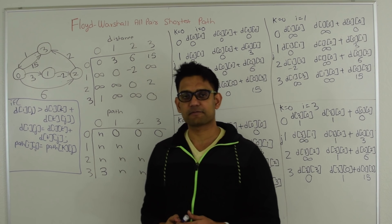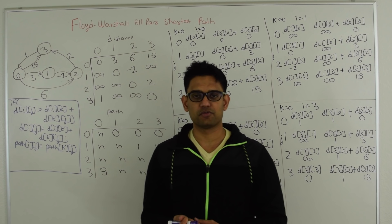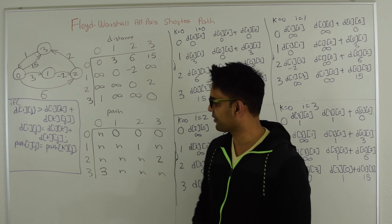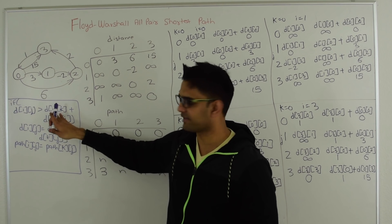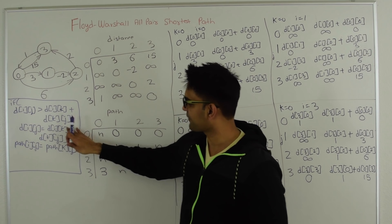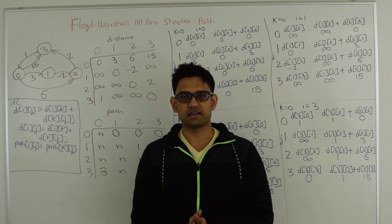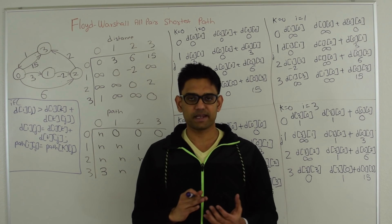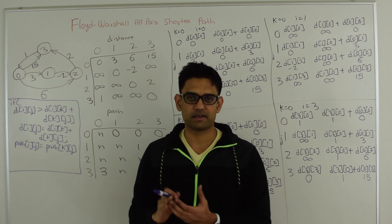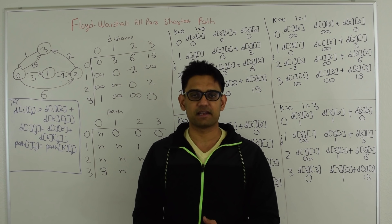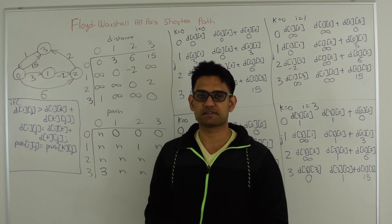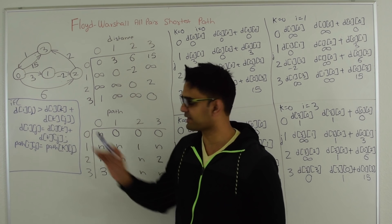Then we have three for loops: k going from 0 to 3, i going from 0 to 3, and j going from 0 to 3. Every time we check: if d[i][j] is greater than d[i][k] plus d[k][j], then d[i][j] becomes d[i][k] plus d[k][j]. We are checking for every pair of vertices whether we get a shorter distance by going through k. In effect, the total number of operations is 4×4×4 = 64.